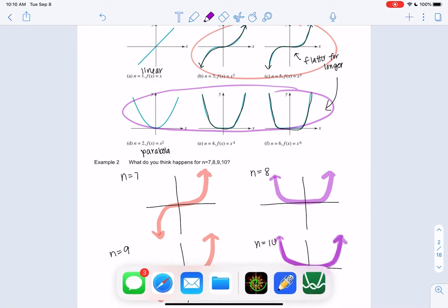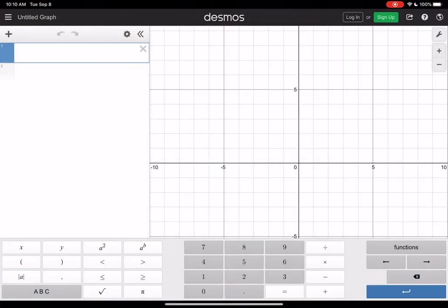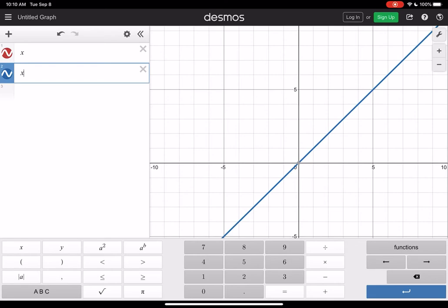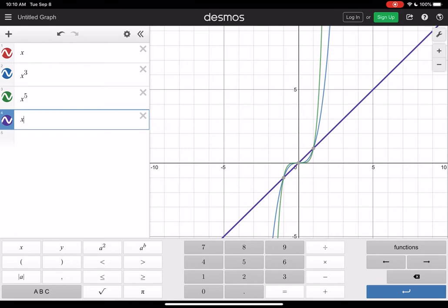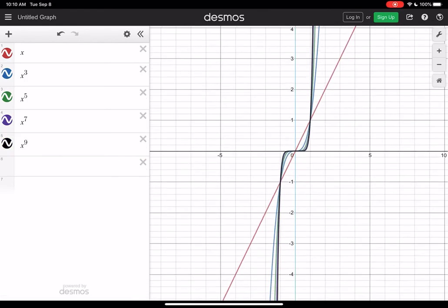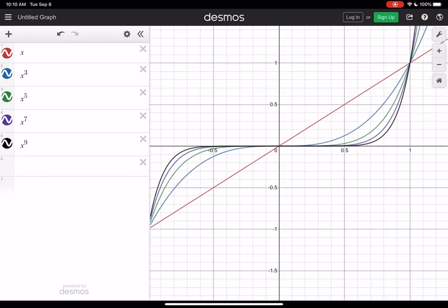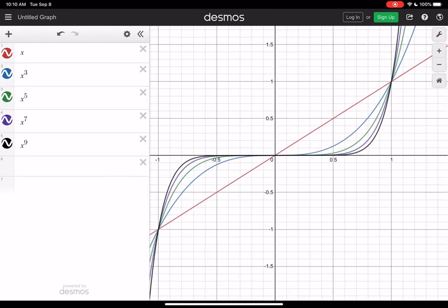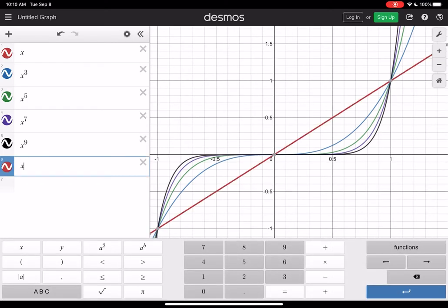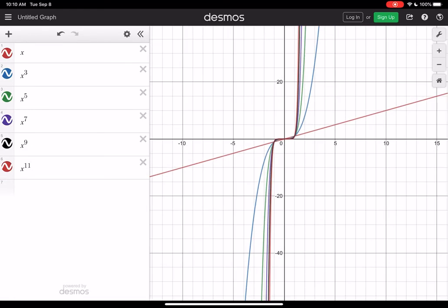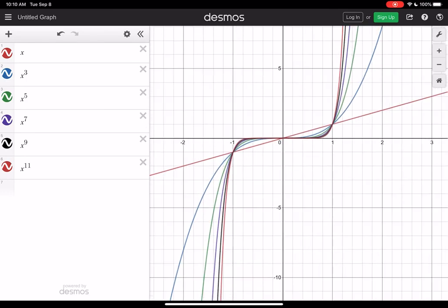We can use Desmos to check. It's nice to compare them all at the same time. Let's do all the odds at the same time. X cubed, X to the 5th, X to the 7th, and X to the 9th. You'll notice, as I zoom in, they're really all the same shape - it's just getting flatter for longer. We can guess X to the 11th is going to be flat for even longer. Yeah, it's a little bit longer on the flat part than X to the 9th. Overall, when I zoom out, the shape looks the same. From a distance, it looks the same. But as I zoom in, I can see that the flatness changes a little.